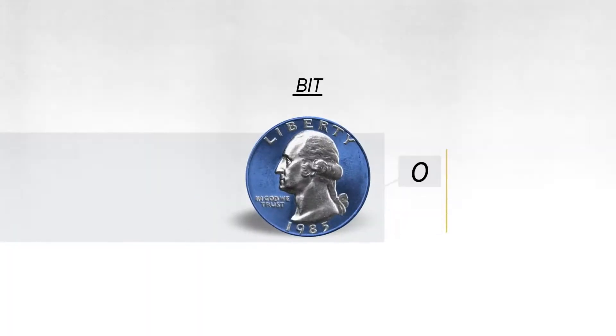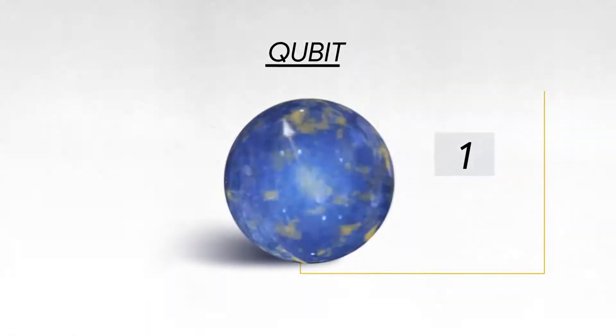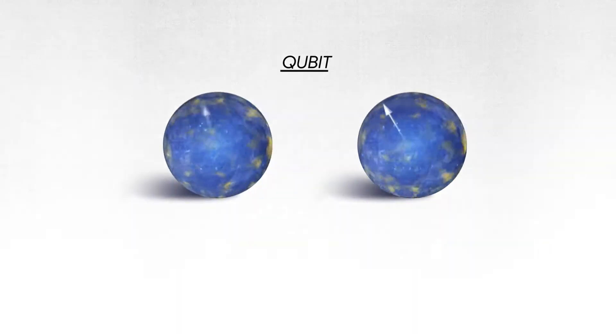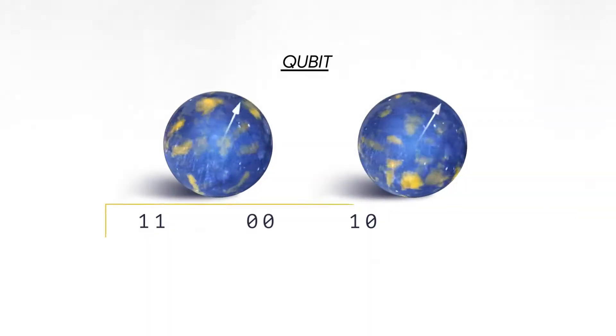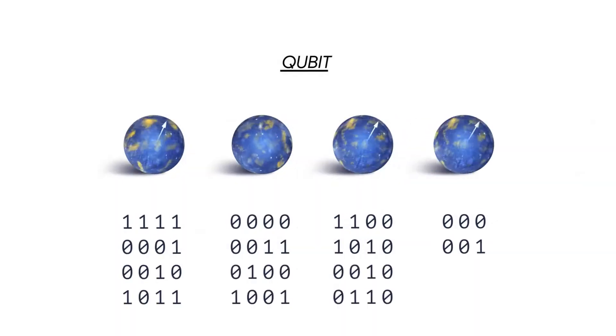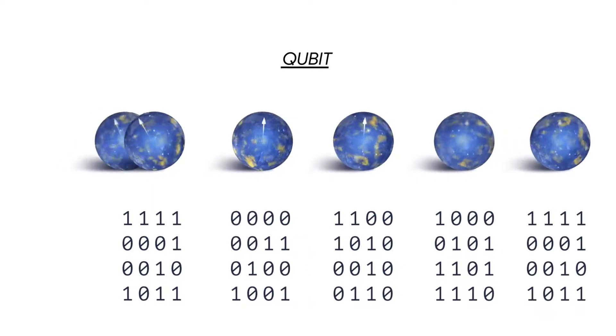The classical bit stores information as a zero or one, and a quantum bit can be both zero and one at the same time. If you have two quantum bits, then there are four possible states that you can put in superposition. With three qubits it's eight, four qubits it's sixteen, it grows exponentially.